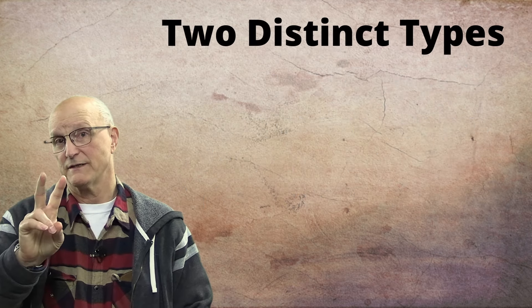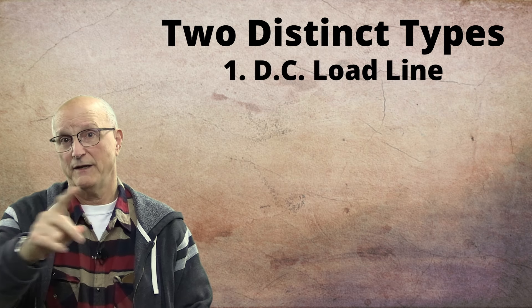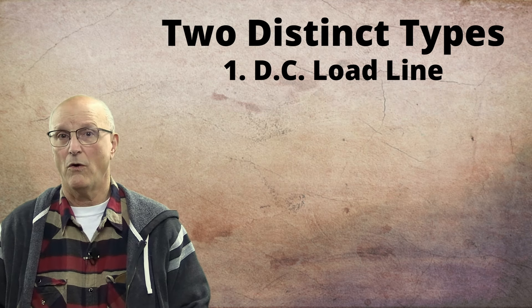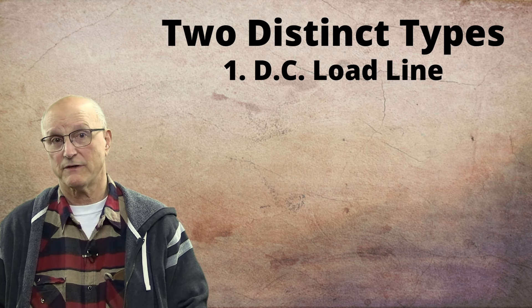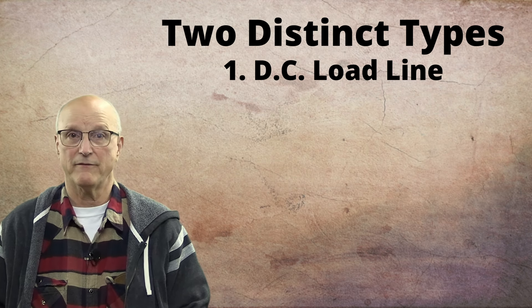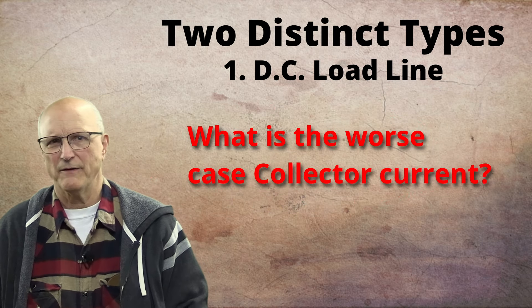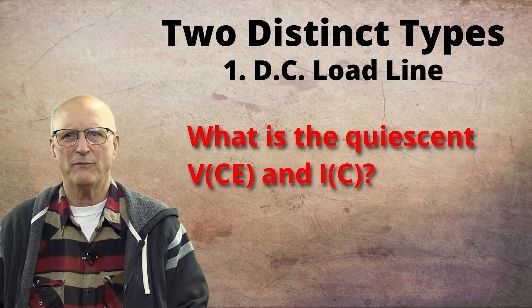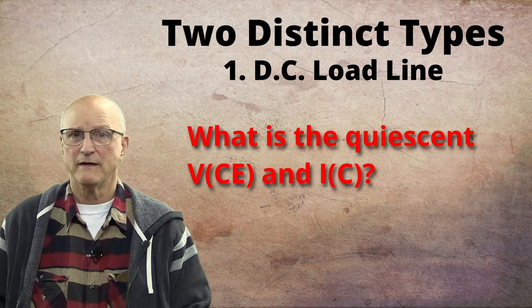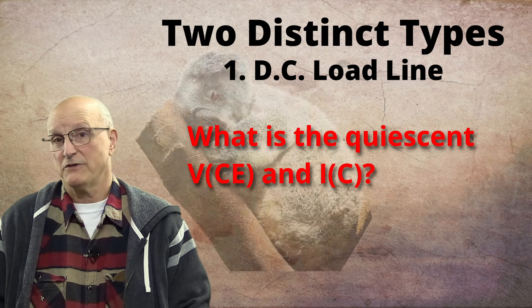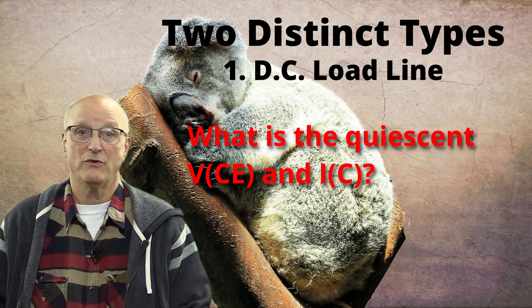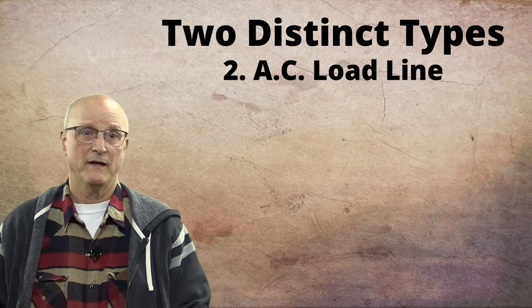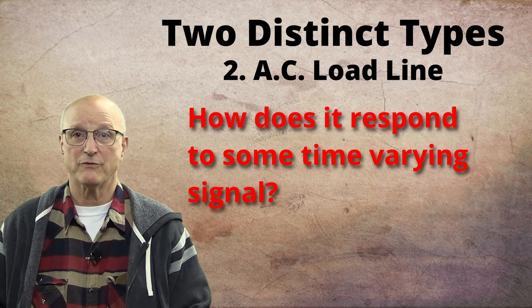There are two distinct types of load lines. There is the DC load line and there is the AC load line. The DC load line helps us see the whole possible range of the transistor circuit's operation from a DC perspective. What is the worst case collector current? What is the maximum output voltage? Where does the transistor live in this continuum when there is no input applied? This is called the quiescent point. The circuit is just sitting there keeping its world warm doing no particular work at all.